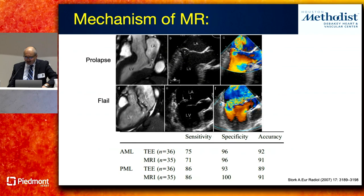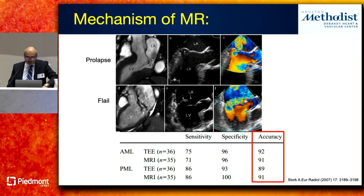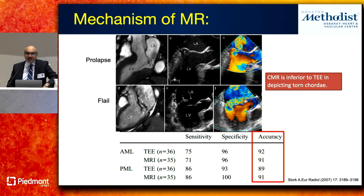A study about 15 years old looked at patients going to surgery who all underwent TEE and CMR to assess mechanism, using surgical findings as reference standard. MRI and TEE both performed reasonably well at identifying anterior or posterior leaflet pathology. However, TEE performed better at depicting torn cordae, because MRI is acquired over several cardiac cycles while TEE is real-time with much higher resolution — an important limitation of CMR to recognize.